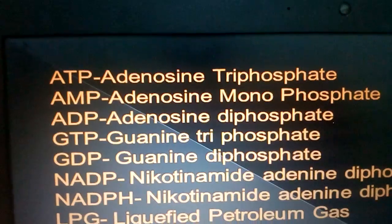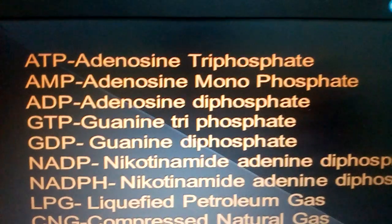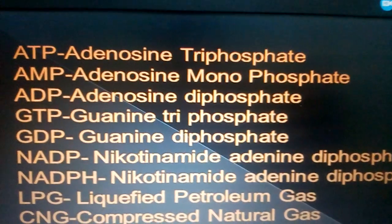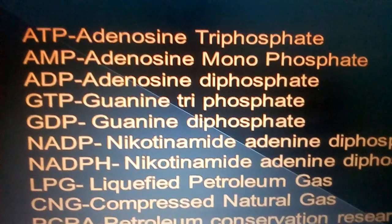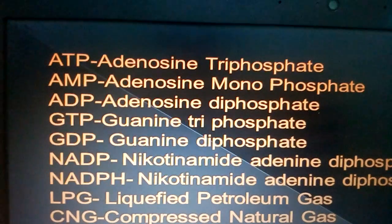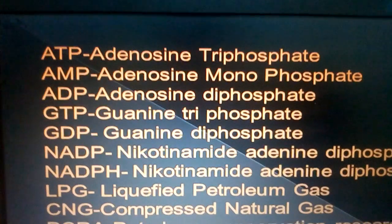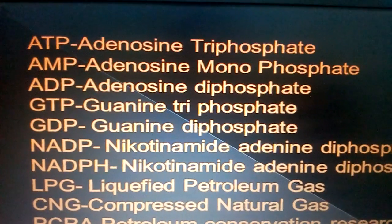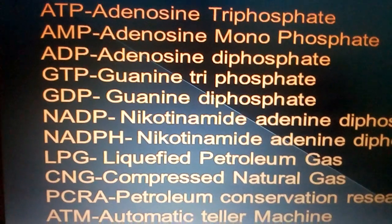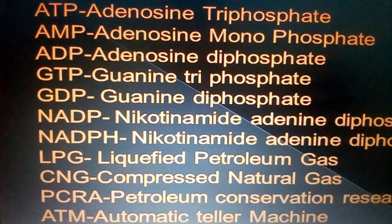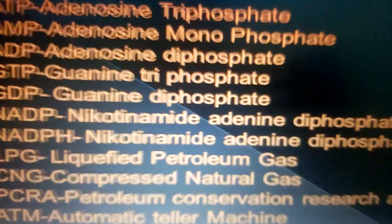ATP: adenosine triphosphate. AMP: adenosine monophosphate. ADP: adenosine diphosphate. GDP: guanosine triphosphate. GDP: guanosine diphosphate. NADP: nicotinamide adenosine diphosphate.